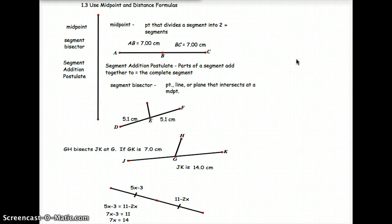Next we have the segment addition postulate, that's parts of a segment add together to equal the complete segment. So in this case here, the segment addition postulate will tell us that AB plus BC will equal AC. So you might want to write that down on your notes, AB plus BC equals AC.